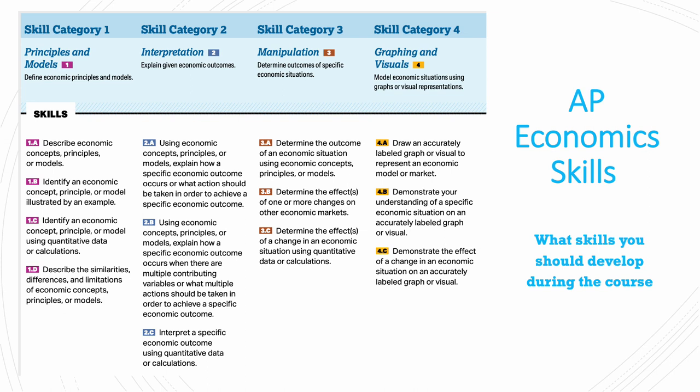The second skill category would be interpretation, which is to explain given economic outcomes — basically using economic concepts, principles, and models to explain how a specific economic outcome occurs, or what actions should be taken in order to achieve a specific outcome. You would use these concepts or models to explain a specific outcome when there are multiple contributing variables, or what multiple actions should be taken to achieve a certain outcome, and you would interpret this information using quantitative data or calculations.